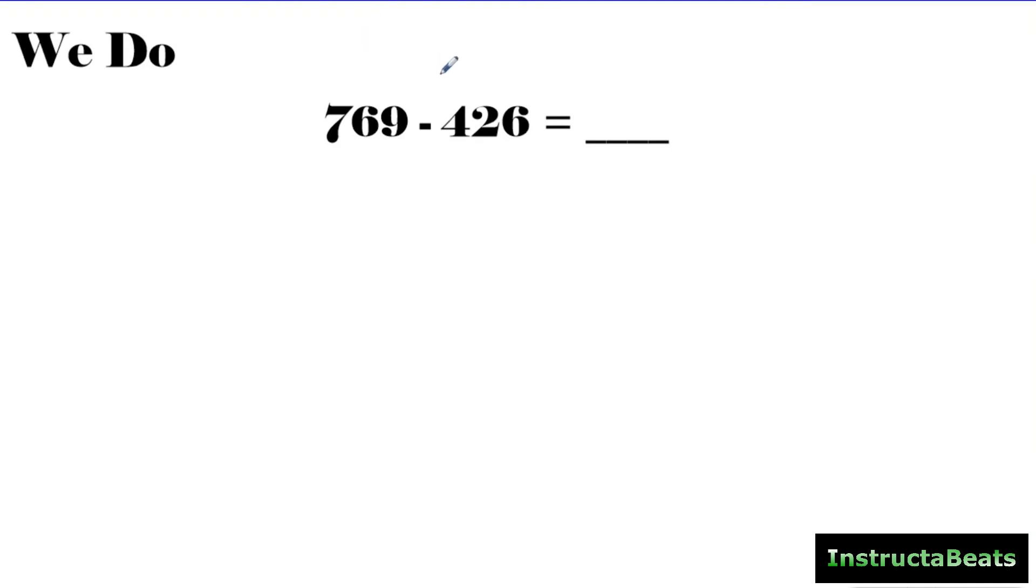So here we have our we do problem. Step number one, we wanted to write out our numbers and line the place values up. Now, you got to be really careful when you're lining these up that you write nice and big and you give yourself lots of space. Because just like when we did expanded form, we don't have all those plus signs to help us line up our place values. So you got to be careful because you don't want to end up subtracting the wrong place value. I always like to say the hardest part about math is being neat. Anybody can learn the math we're doing. You just have to be neat.